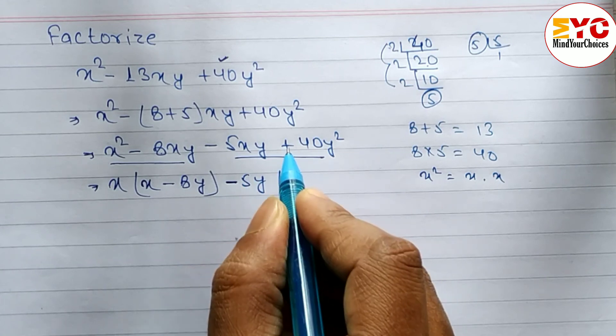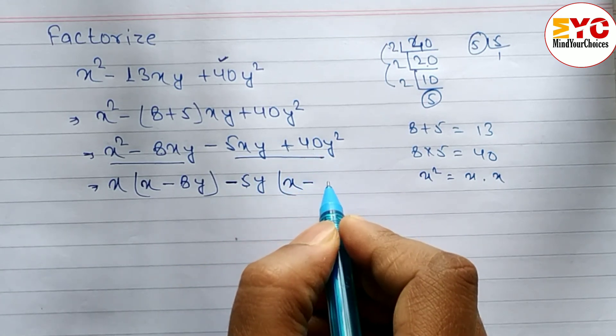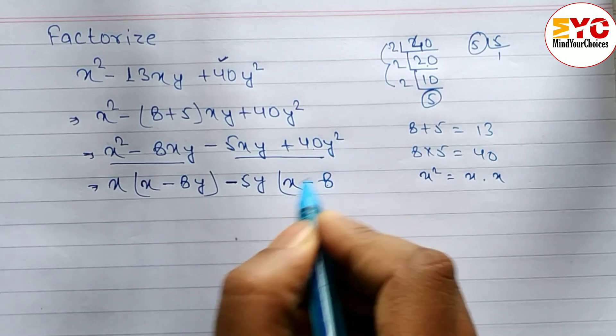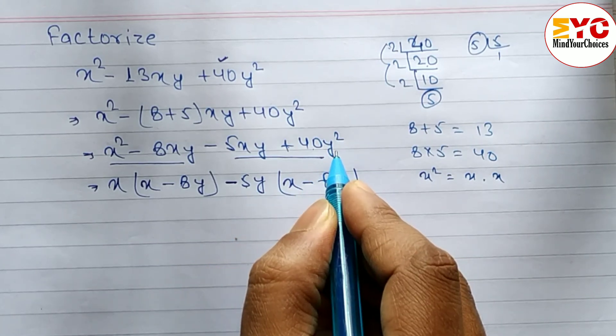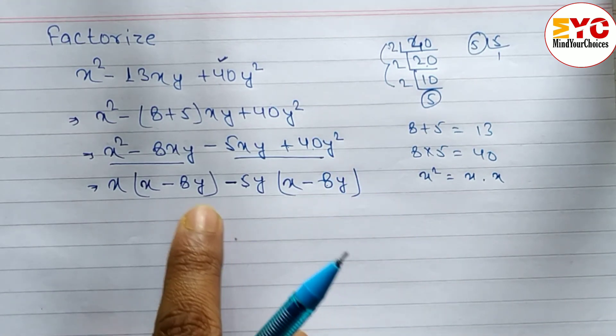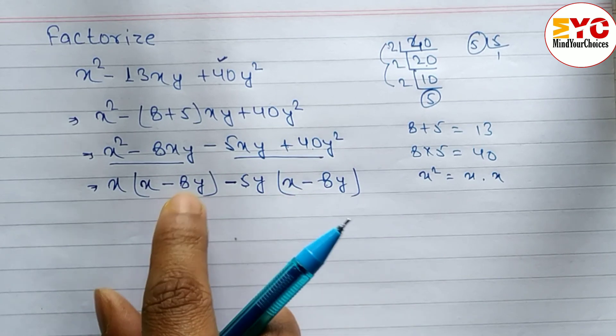When minus is common we change the sign. One thing to keep in mind: this (x minus 8y) here and here both should be same. If not same, whatever you are doing is a mistake. Now here is correct.